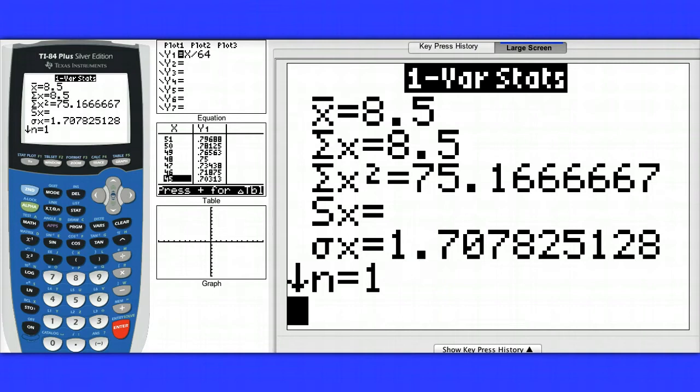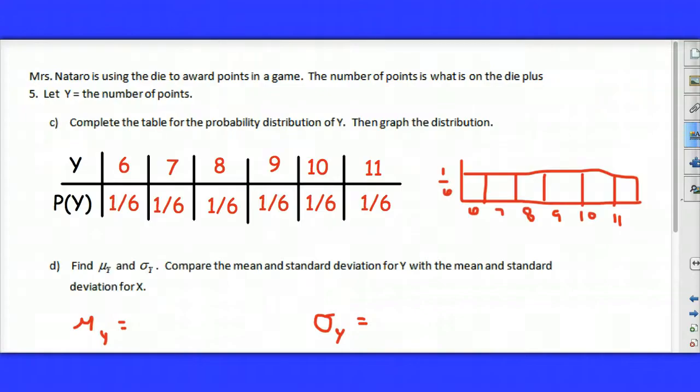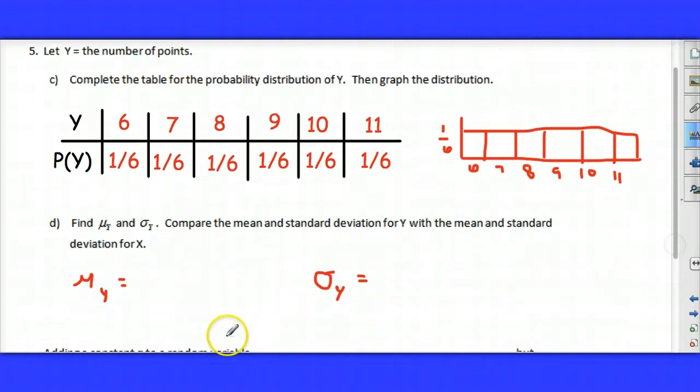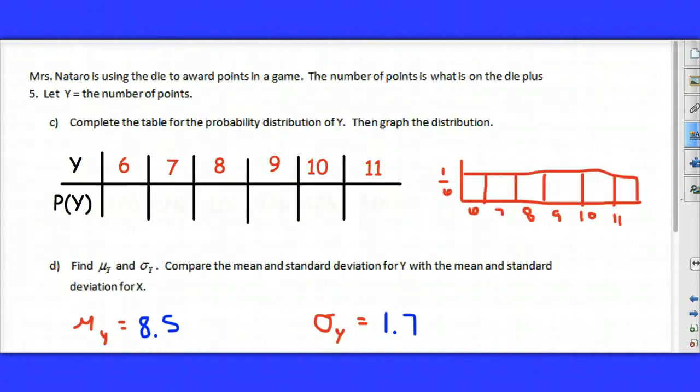That should sound familiar with some stuff that we did earlier in the year. When you add the same value to every number in a data set, the mean will increase or decrease by that number. But the standard deviation will stay the same. We'll say it's about 1.7. Yes, 1.7.